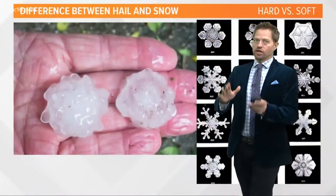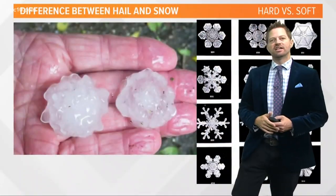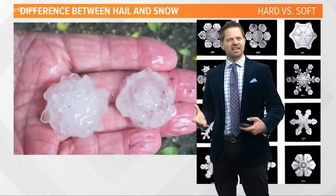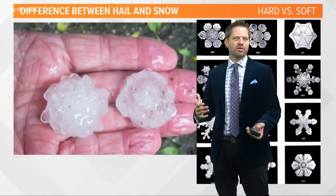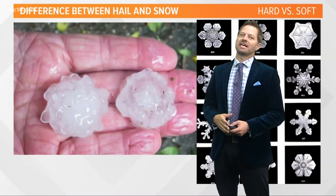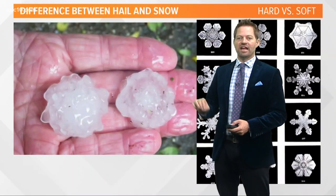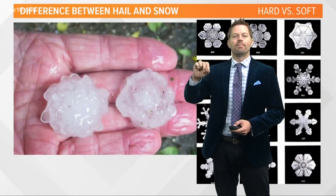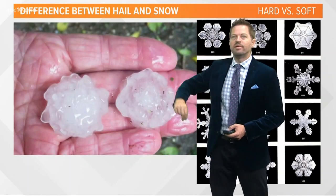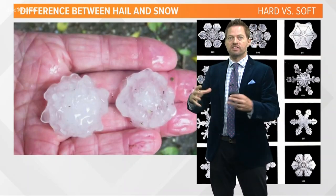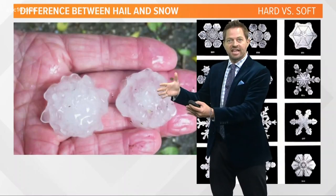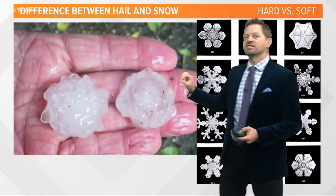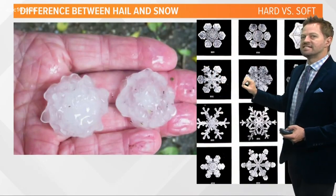This is such a good question because it seems similar, right? It's frozen water coming out of the sky, so how different really is hail from snow? Well, it turns out it's a lot different. A hailstone starts off as a droplet of water, a raindrop. It goes up and down in the clouds. It freezes and thaws and freezes and thaws, and it gets bigger and bigger. But it's hard — it's basically a chunk of ice.